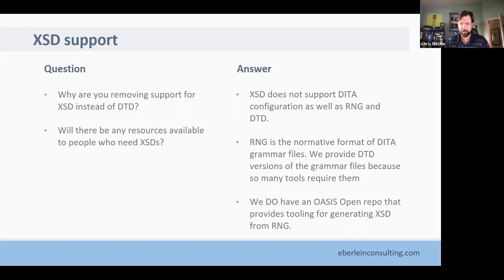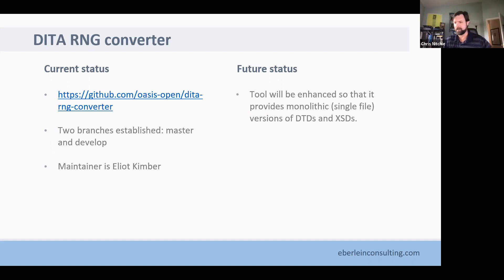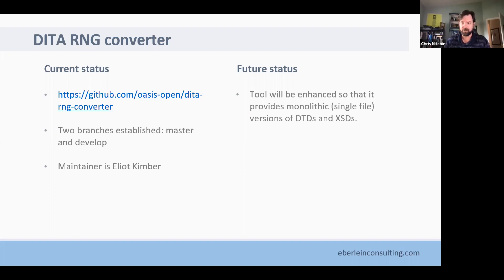We do have tooling — there's an OASIS open repository with the DITA RNG converter that will take the authoritative RNG grammars and generate the DTDs and XSDs from them. That's actively maintained and being developed by various members of the DITA TC and the community. We actually use it internally to generate the DTDs from the RNGs. It's a very labor-intensive process for a volunteer organization that's not all that big to maintain the XSD grammars and all their complexity. We do recognize that certain vendors need to use XSD, so we have that OASIS open repository for generating those.